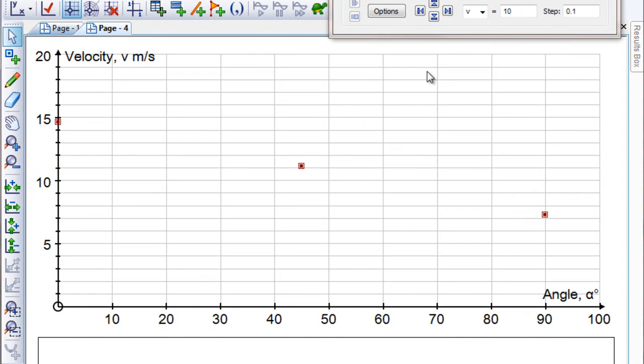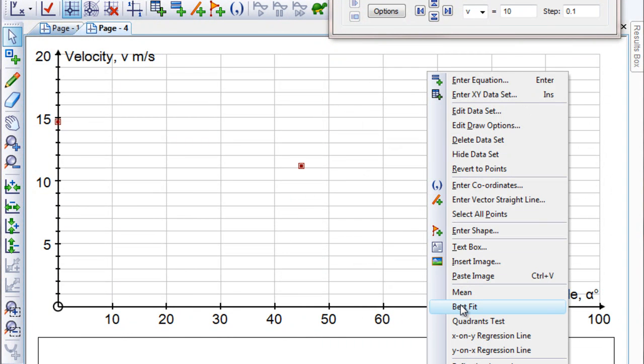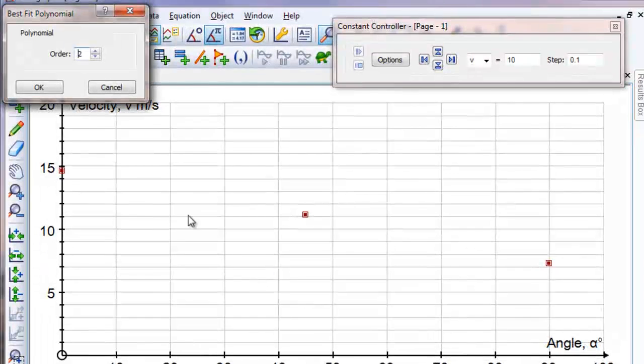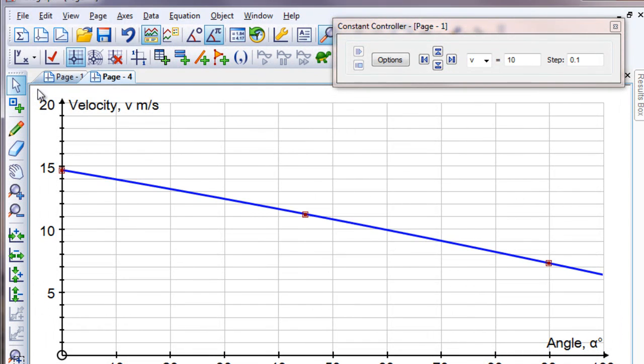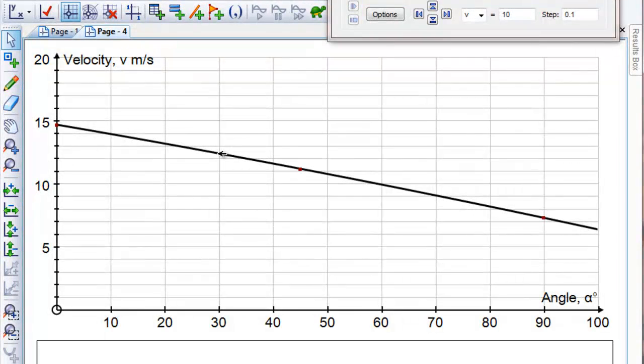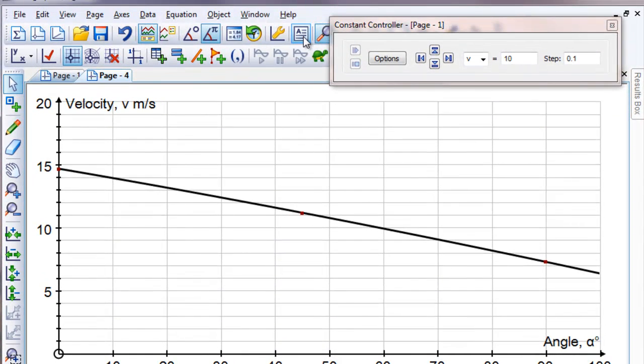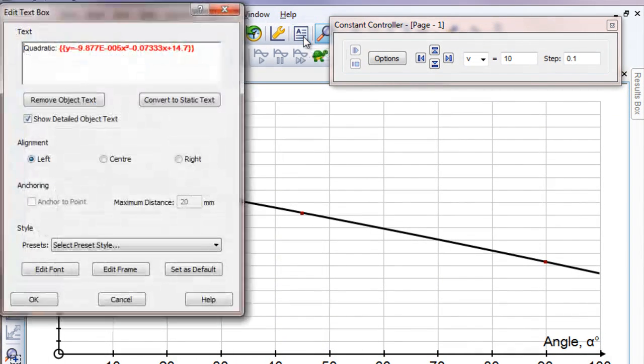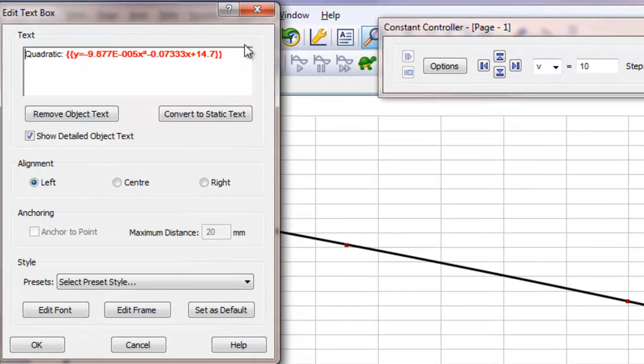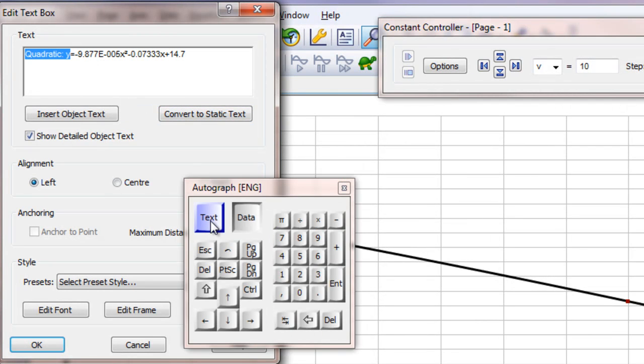So we've got three points here, which are not quite linear. So I'm going to do a best fit parabola through those. Because that seems to be a very good fit. Excellent. So if we select the function and look at the text for it, we'll get the equation of the parabola because that's what we really need.